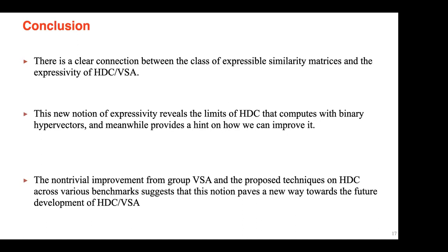In conclusion: (1) there is a clear connection between expressible similarity matrices and HDC expressivity — if an HDC model can represent a similarity matrix, it can learn certain tasks; (2) this analysis reveals limits of binary HDC and hints at how to improve it; (3) Group VSA with random frame features shows non-trivial improvements on ISOLET, MNIST, and Fashion-MNIST, paving a path toward using HDC on more challenging machine learning tasks including graph learning.